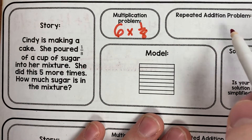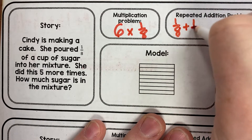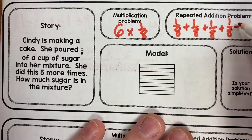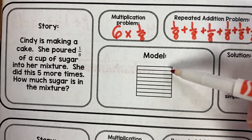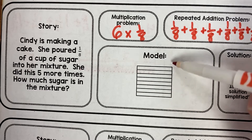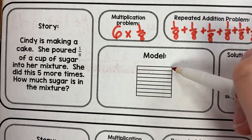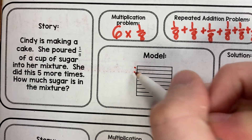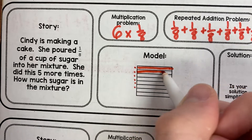First I'm going to do my repeated addition. That means I need to do one-eighth six times. So now comes our model. I look and see I have my eighth piece right here. Now that I have my model, what I need to do is add one-eighth six times.